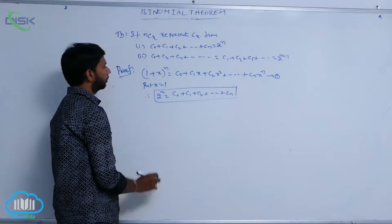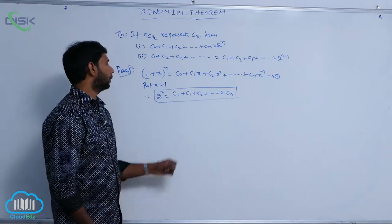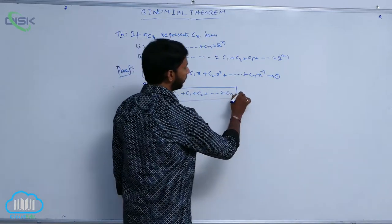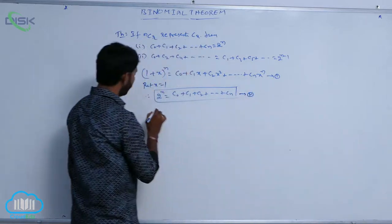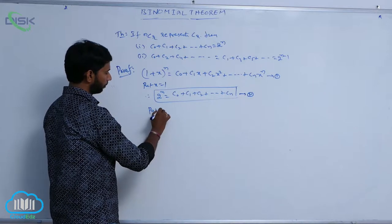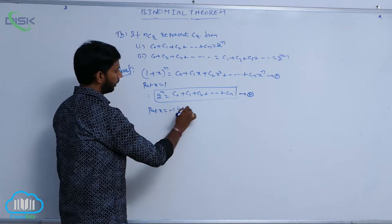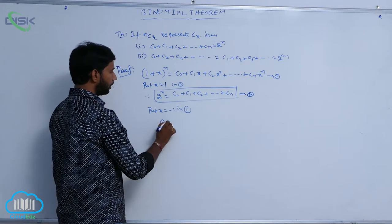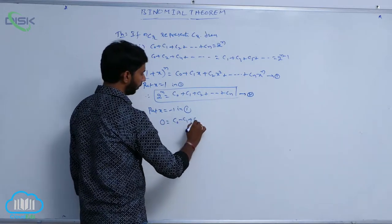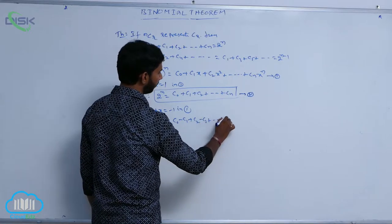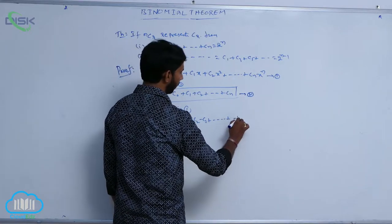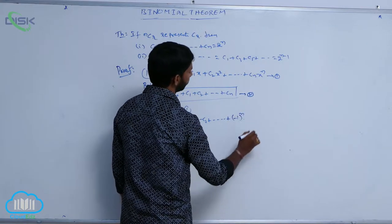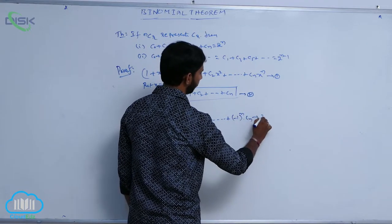This is considered condition number 2. Now put x = -1 in condition number 1. That gives 0 = C₀ - C₁ + C₂ - C₃ + ... + (-1)ⁿ Cₙ. This is considered condition number 3.